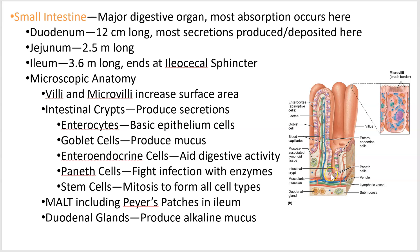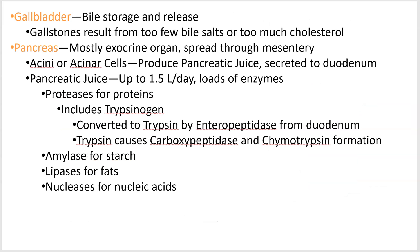Intestinal crypts are little depressions — kind of like a reverse villus, a little pit into the mucosa and submucosa. The cells found in there are listed here. Enteroendocrine cells produce enteropeptidase, if you remember that.